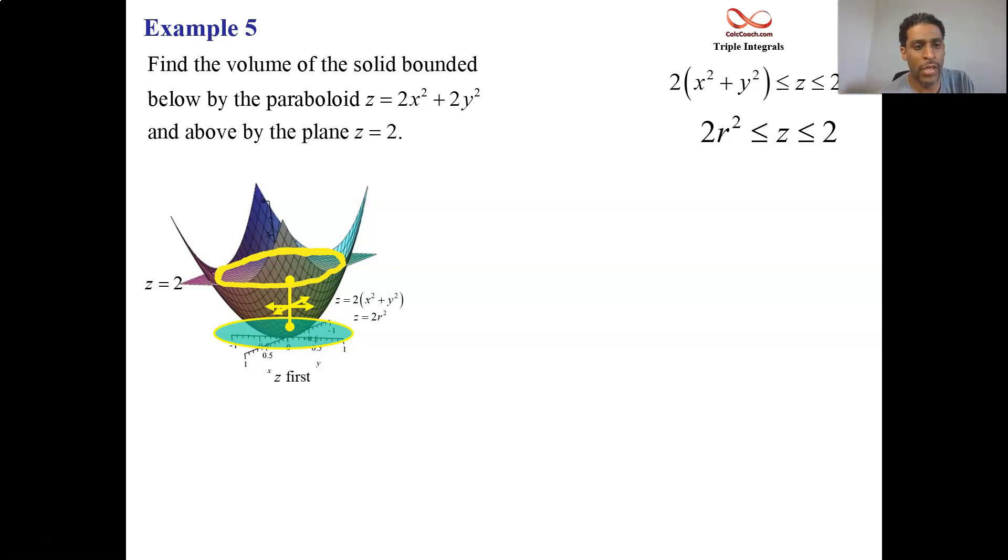What about this circle where they intersect each other? If on the one hand z = 2, and on the other hand z = 2r², we set them equal to each other.